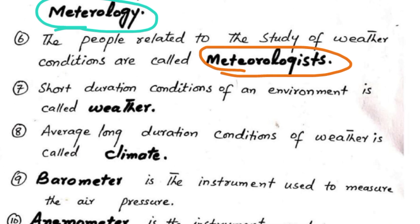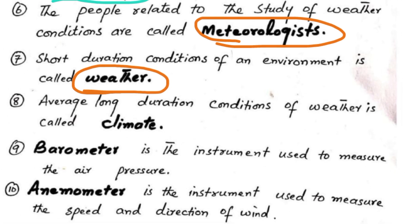Short duration condition of an environment is called weather. Average long duration conditions of weather is called climate.